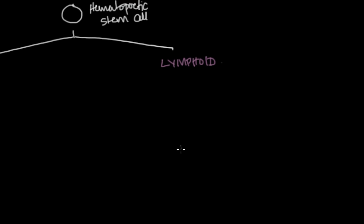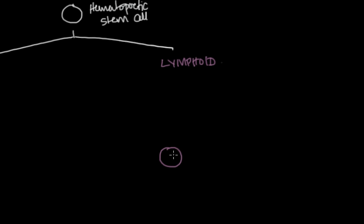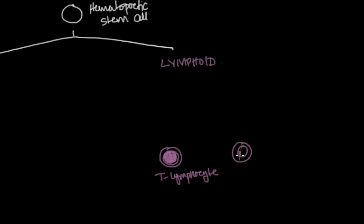The lymphoid group includes two different types of blood cells. First there's the T cell, or T lymphocyte. The majority of the cell is taken up by the cell's nucleus — so much so that this cell has a nickname. It's often referred to as a naked nucleus because it looks like the nucleus isn't surrounded by very much cytoplasm. It's very similar in appearance to the other type of lymphoid cell: the B cell, or B lymphocyte, which also has a nucleus that takes up the majority of the cell.